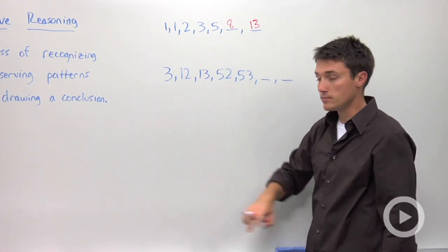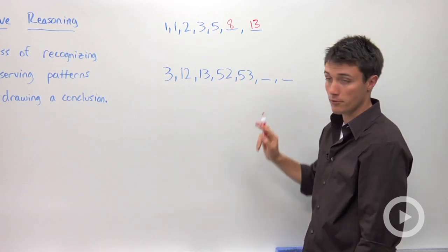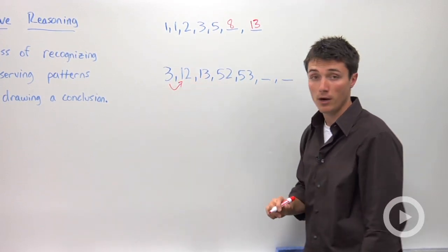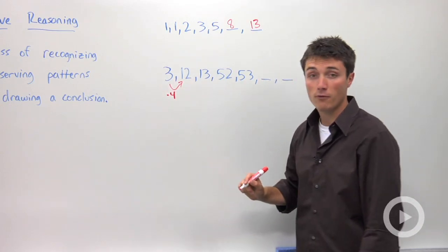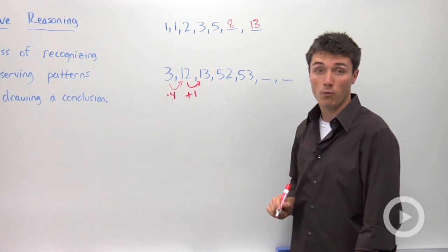Using this once more, we have a pattern that goes three, twelve, thirteen, fifty-two, fifty-three. Now what I'm going to do in my head is say, well, how do I get from three to twelve? I could say that that is adding nine or I could say that it is multiplying by four. Now after I multiply by four, I see that I add one.